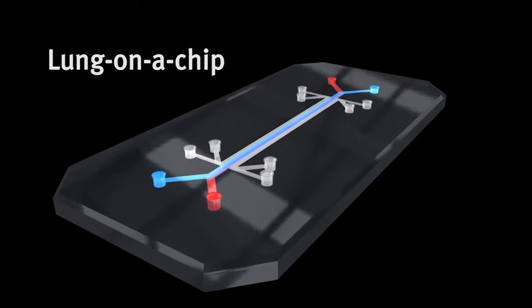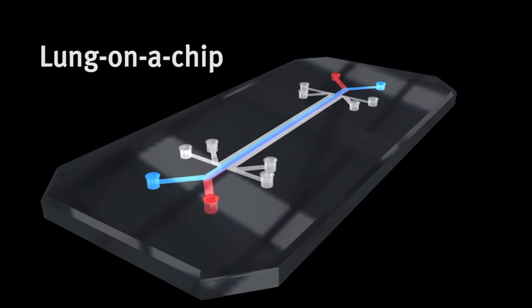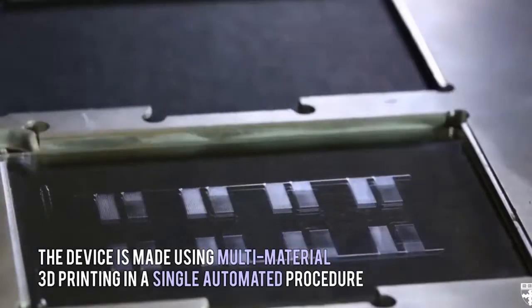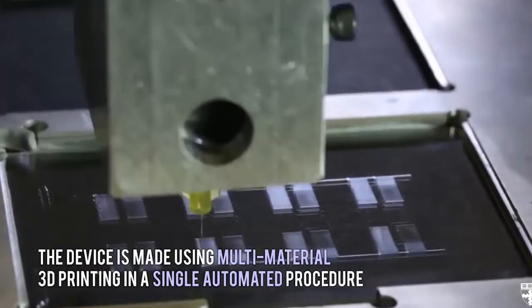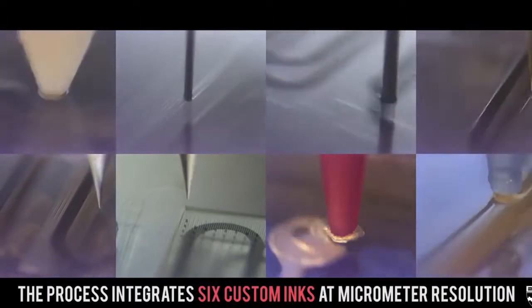Organs on a chip research is bringing that day closer. This emerging technology allows scientists to watch the cascade of events that takes place in organs in response to drugs or during disease. Organs on chips are 3D biochips, no bigger than a computer memory chip, that contain living human cells from an organ or tissue, engineered in layers and channels.